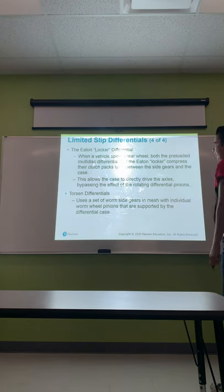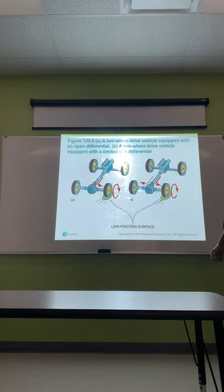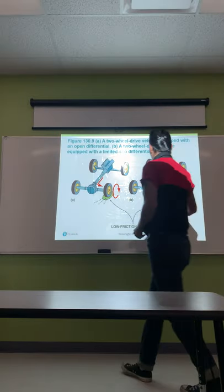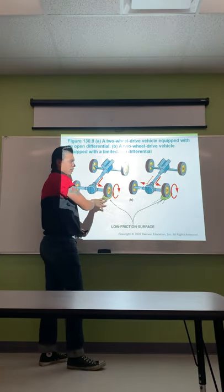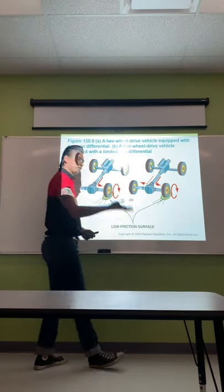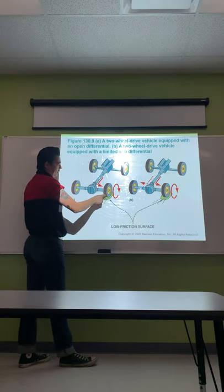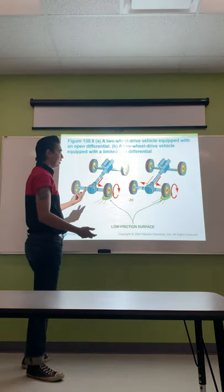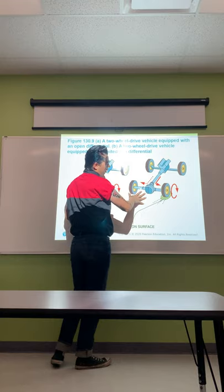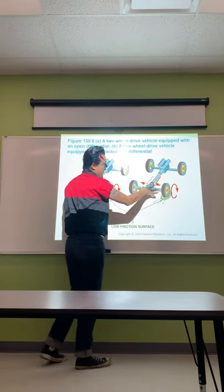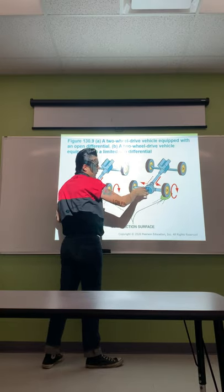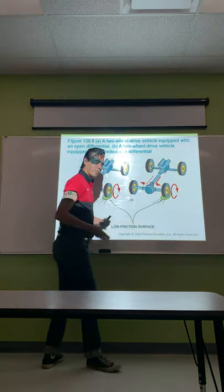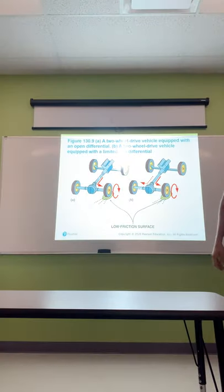Torsion differentials use a set of worm side gears that mesh with individual worm wheel pinions supported by the differential case. With a two-wheel drive vehicle equipped with an open differential on a low-friction surface, it sends the most power to the wheel with the least traction — counterproductive when trying to maintain traction. With a locker or limited slip differential, it sends power to both wheels to help propel the vehicle whether you're stuck or slipping.